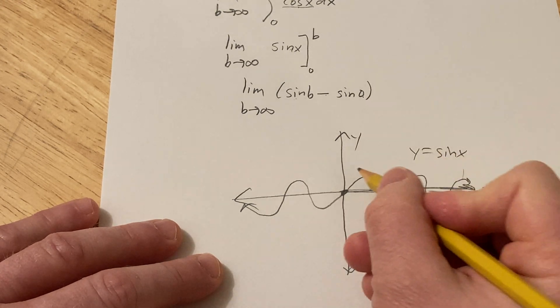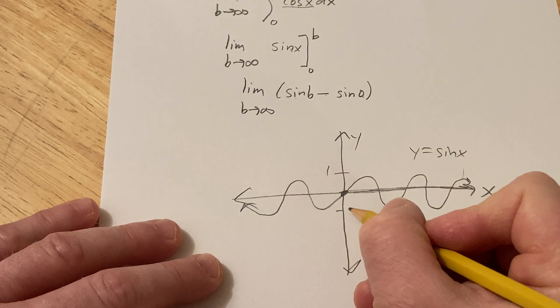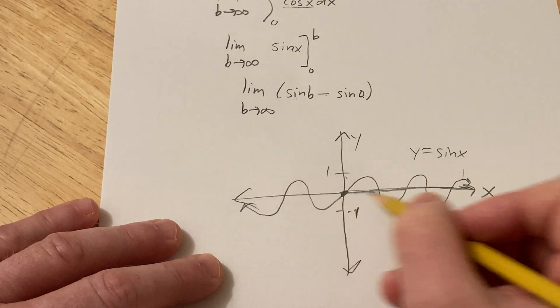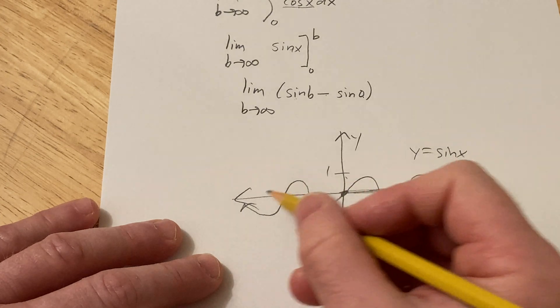It takes a maximum of 1 and a minimum of negative 1. So it just oscillates back and forth. It repeats. It's periodic. So it goes on forever.